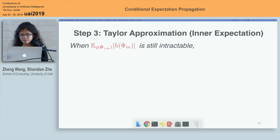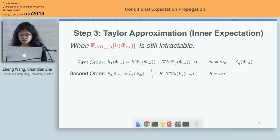The last step is optional because even if we change the distribution of the expectation, the calculation can still be intractable. In such situations, we return to the conditional moment and use Taylor approximation to estimate it. In this way, after taking the expectation, we can formulate the approximate moment in an analytical way.